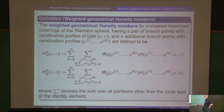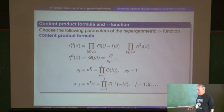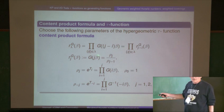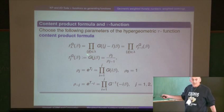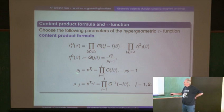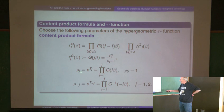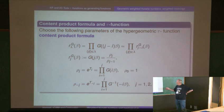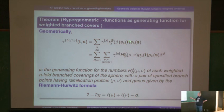I'm at slide 21 and I have 43 slides, so I'll speed up. Define your content product formula using the following: the R's — which were exponentials in Okounkov's case — are evaluations of your weight generating function at the point j·beta. So if this is exponential, you get back to before. Take the content product of that and call it R_lambda. This is just for the fermionic representation later on.